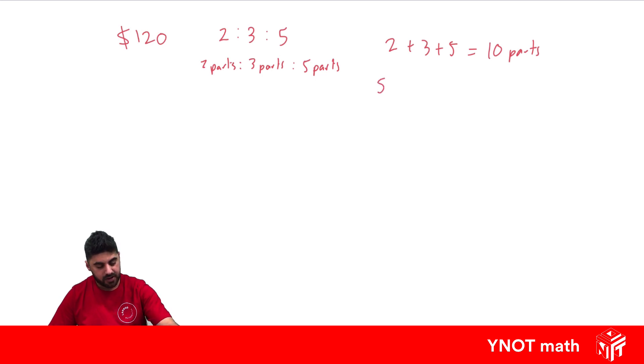Then, we're going to take our $120, the thing we want to split up, and divide it by the total amount of parts. And that's going to be $12. And remember, once you do this, this gives us the value for 1 part. This time we want to split it up in the ratio 2 parts to 3 parts to 5 parts. If we know 1 part is $12, 2 parts is going to be 2 times 12, 3 parts is going to be 3 times 12, and 5 parts is going to be 5 times 12.